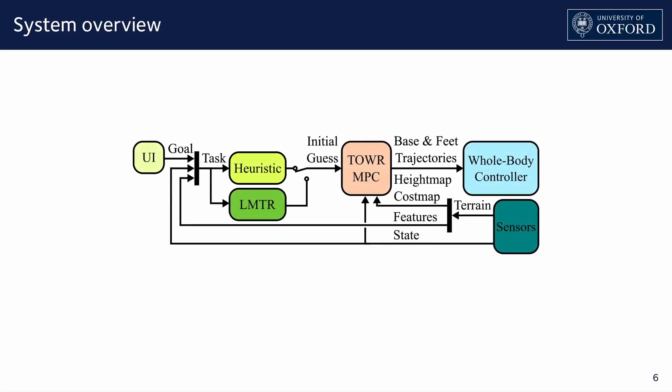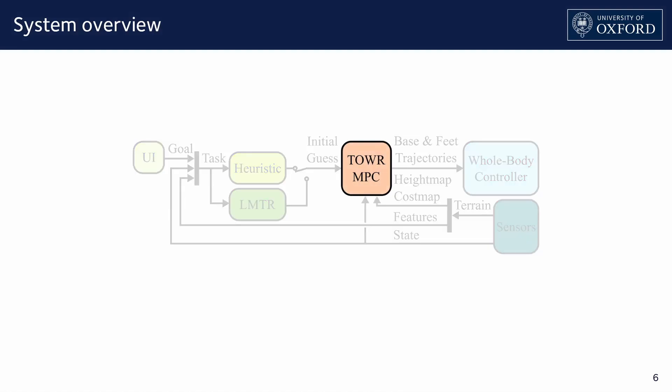In this paper, we present a perceptive receding horizon planner, TOWR MPC. We propose two alternate methods for initializing the non-linear programming problem. The first is a heuristic which naively reuses remaining parts of previous solutions and uses linear interpolation for the emerging horizon.